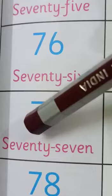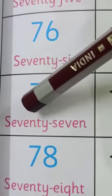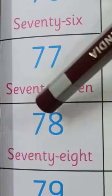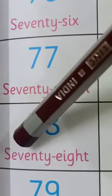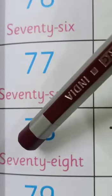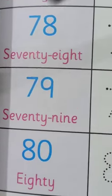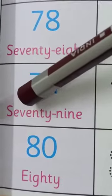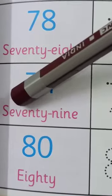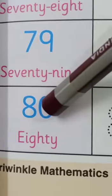S-E-V-E-N-T-Y, 70, S-E-V-E-N, 7, 77. Next number is 78. S-E-V-E-N-T-Y, 70, E-I-G-H-T, 8, 78. Next number is 79. S-E-V-E-N-T-Y, 70, N-I-N-E, 9, 79. Next number is 80.